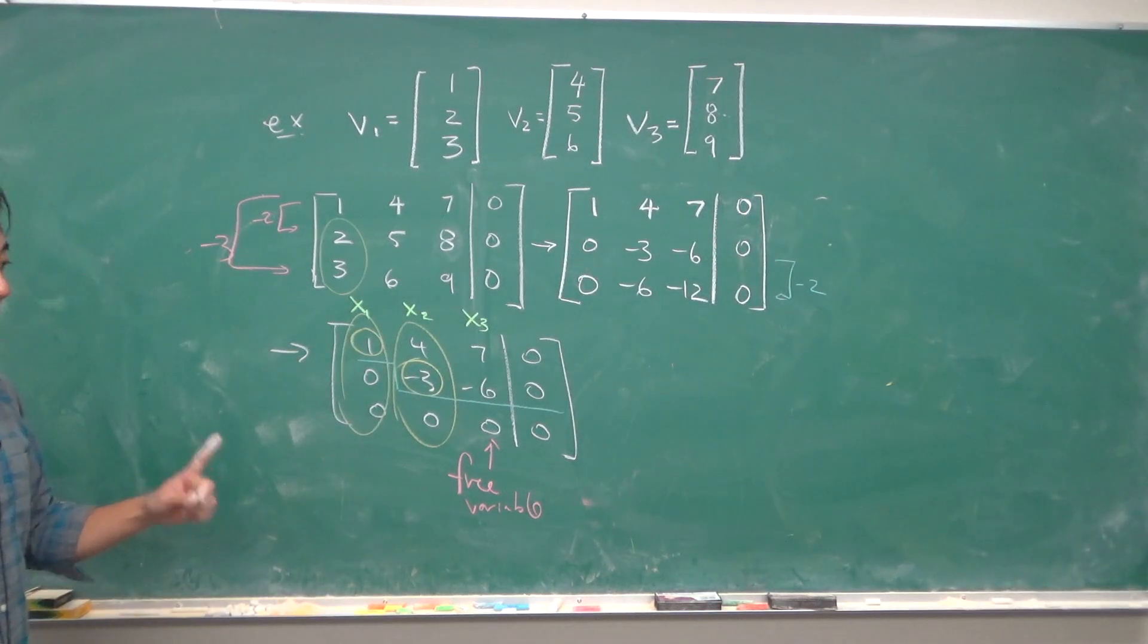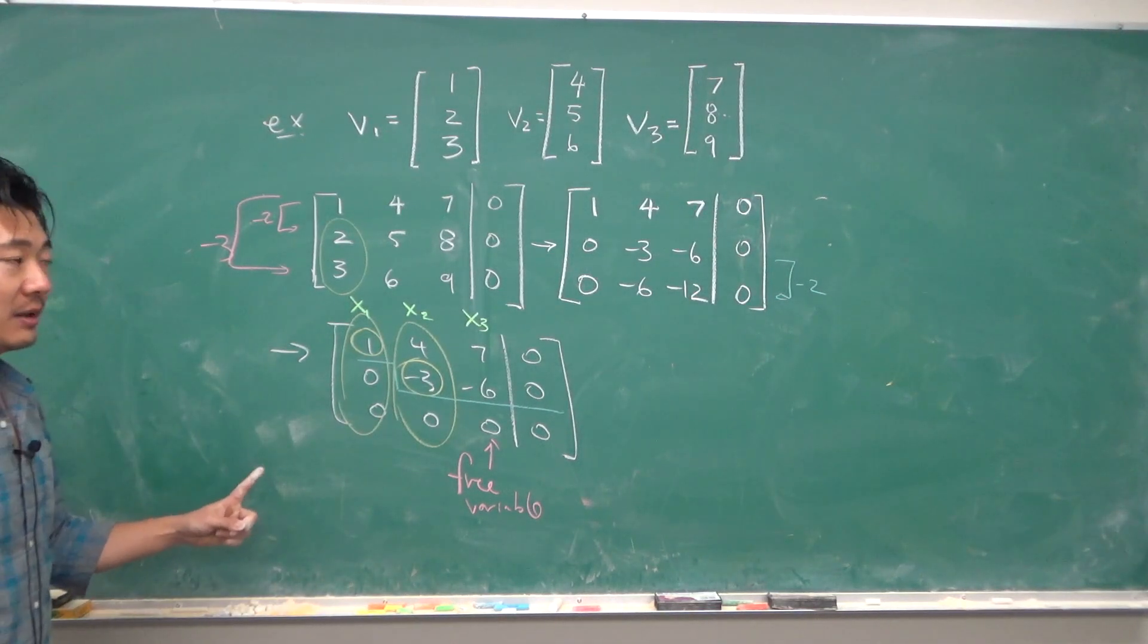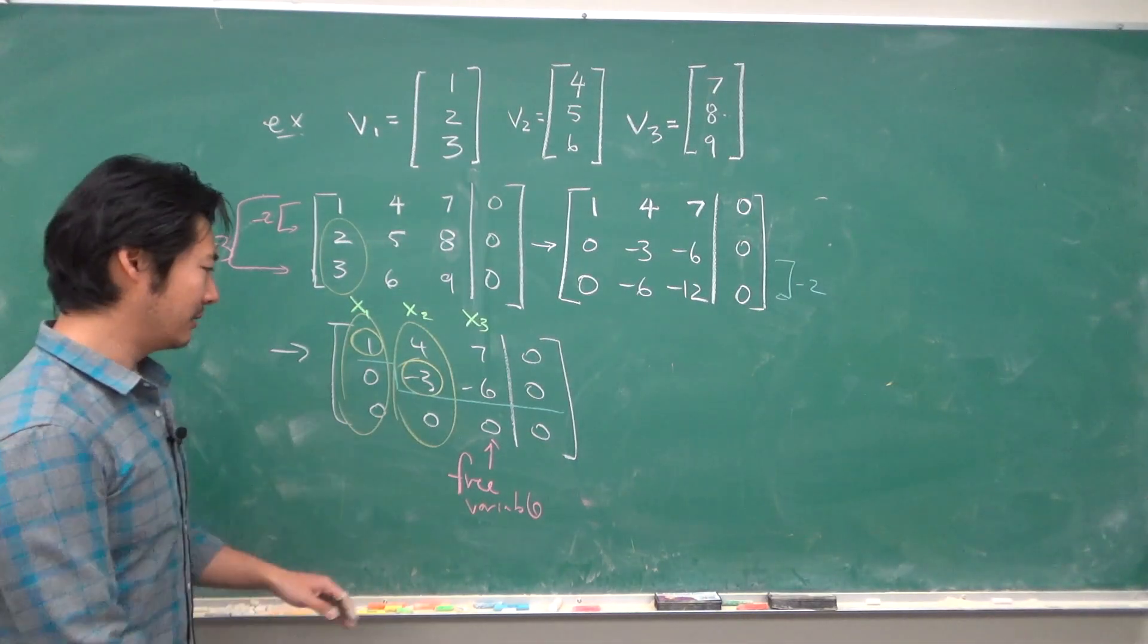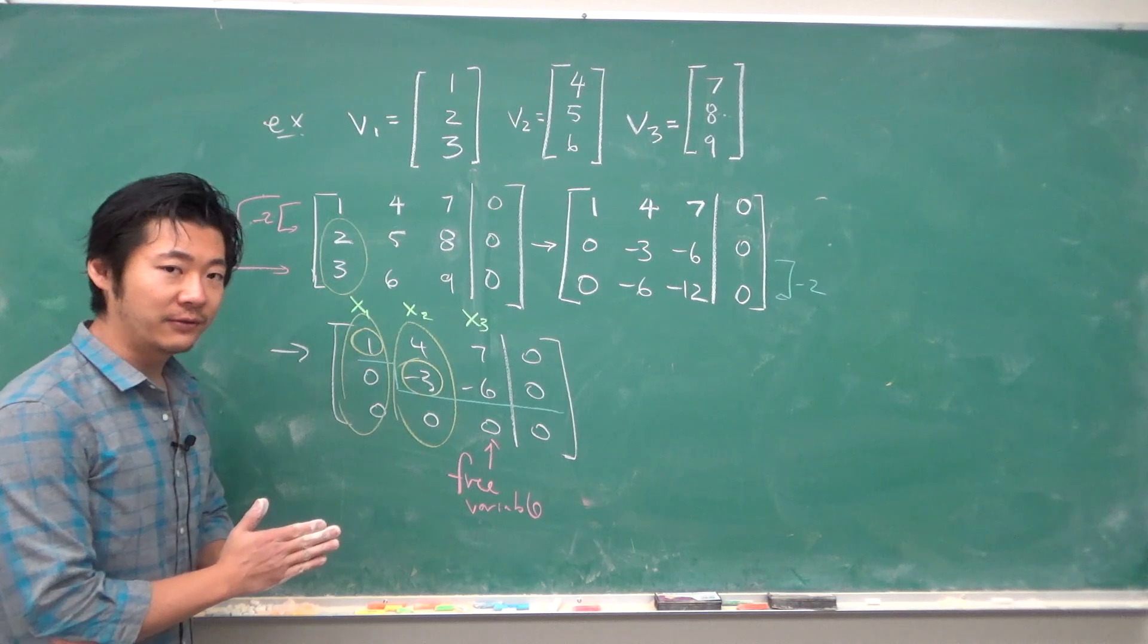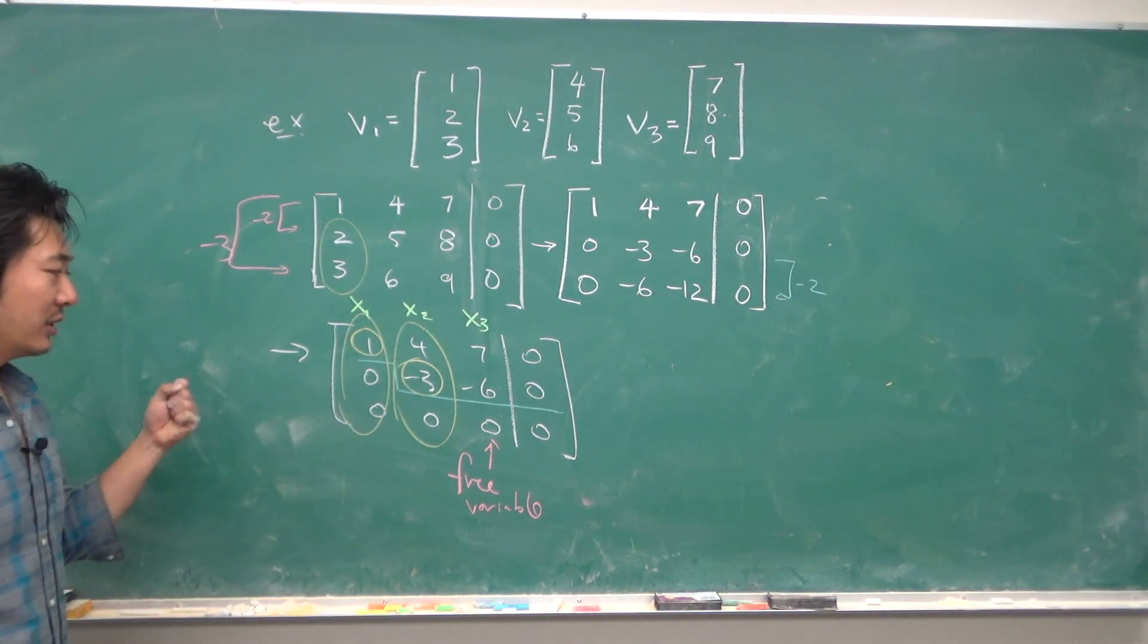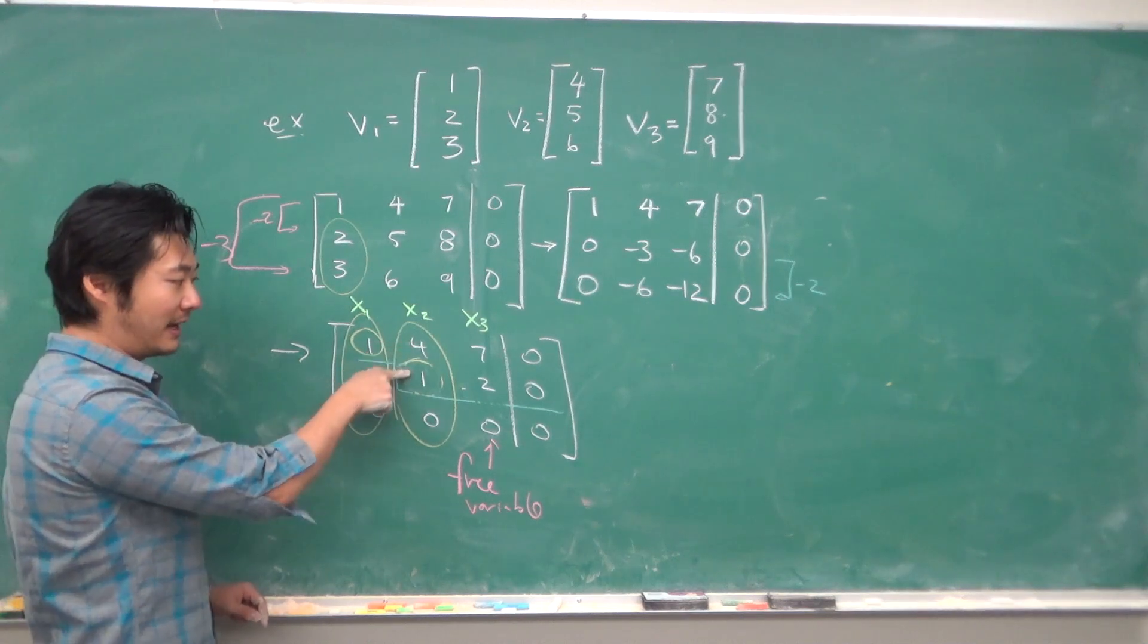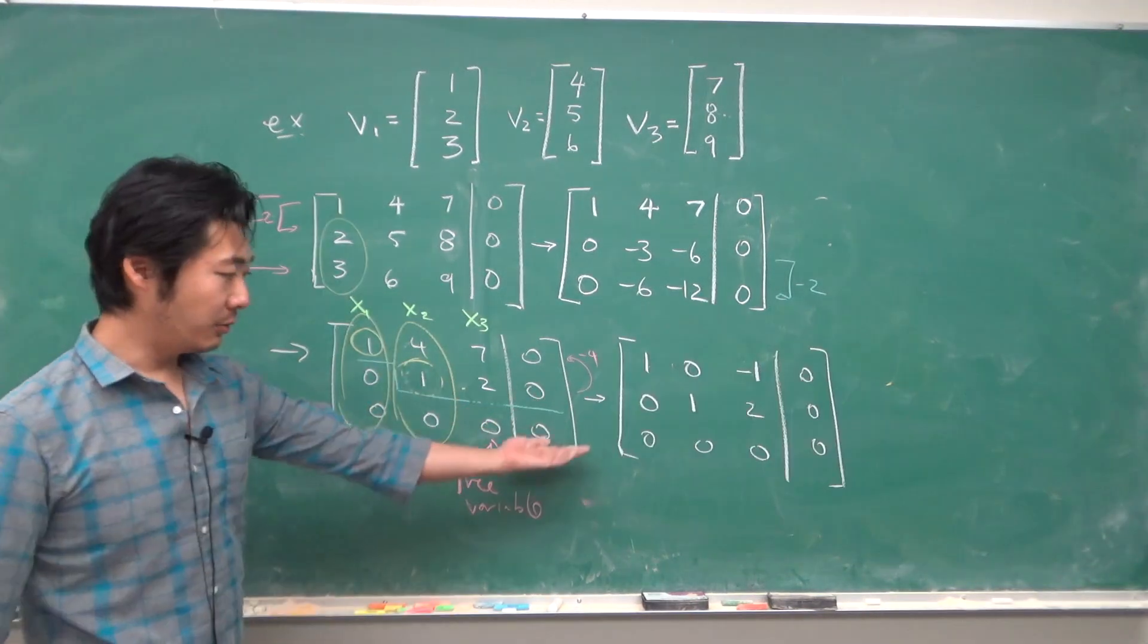So we know that they are not linearly independent, or linearly dependent. Just to finish off the problem, we can make this into row reduced echelon form. In the next step, we will divide by negative 3, multiply row 2 by negative 4, and add it into row 1 so that we get this.